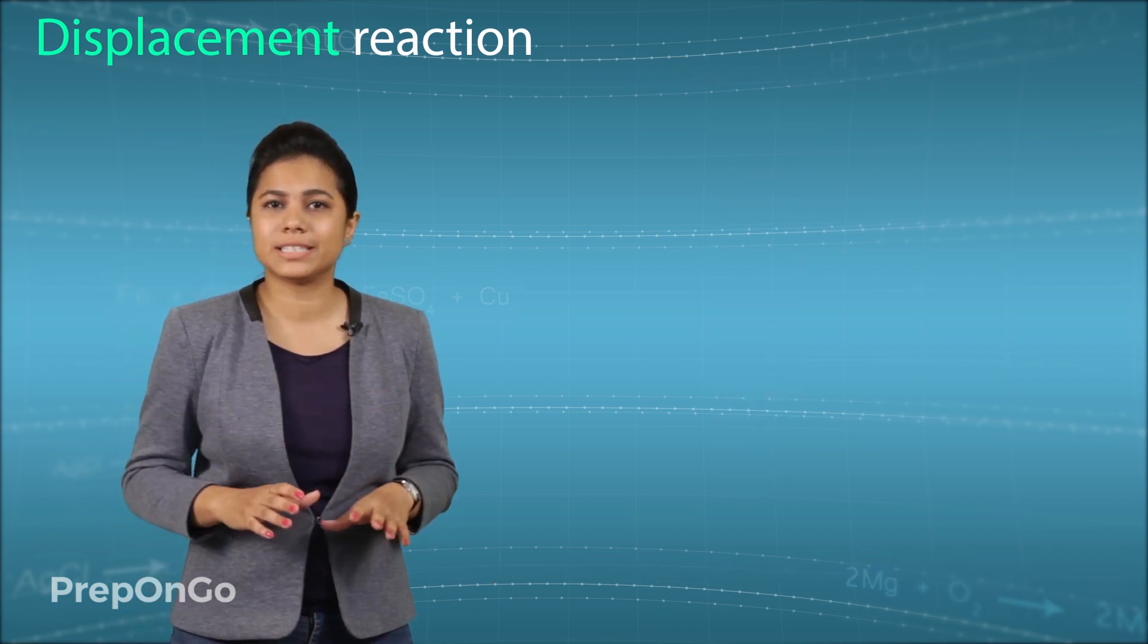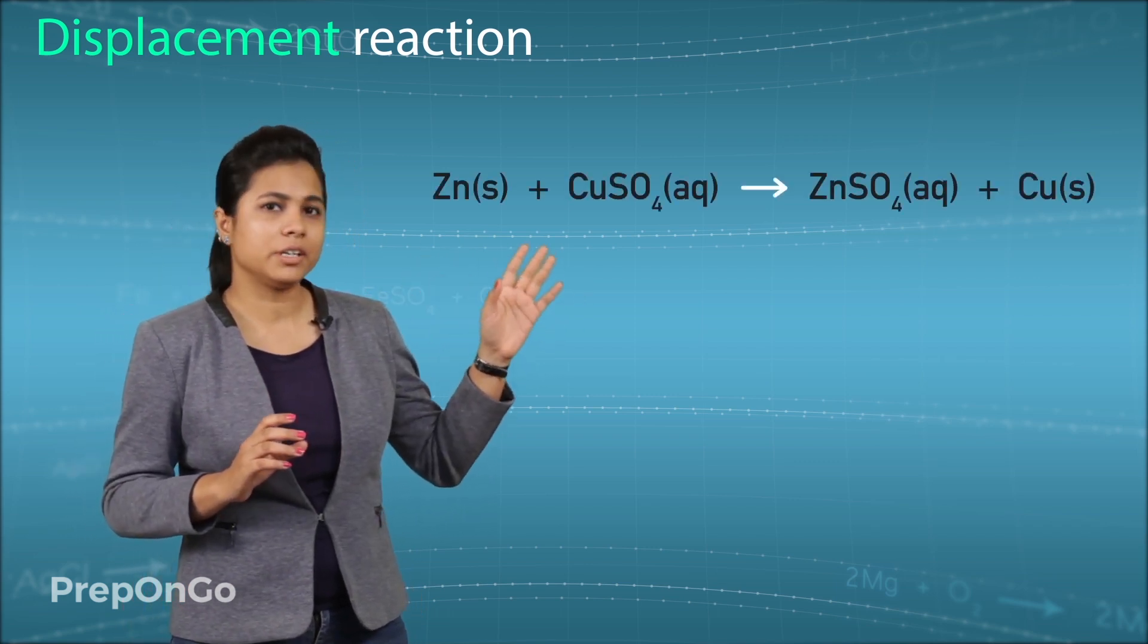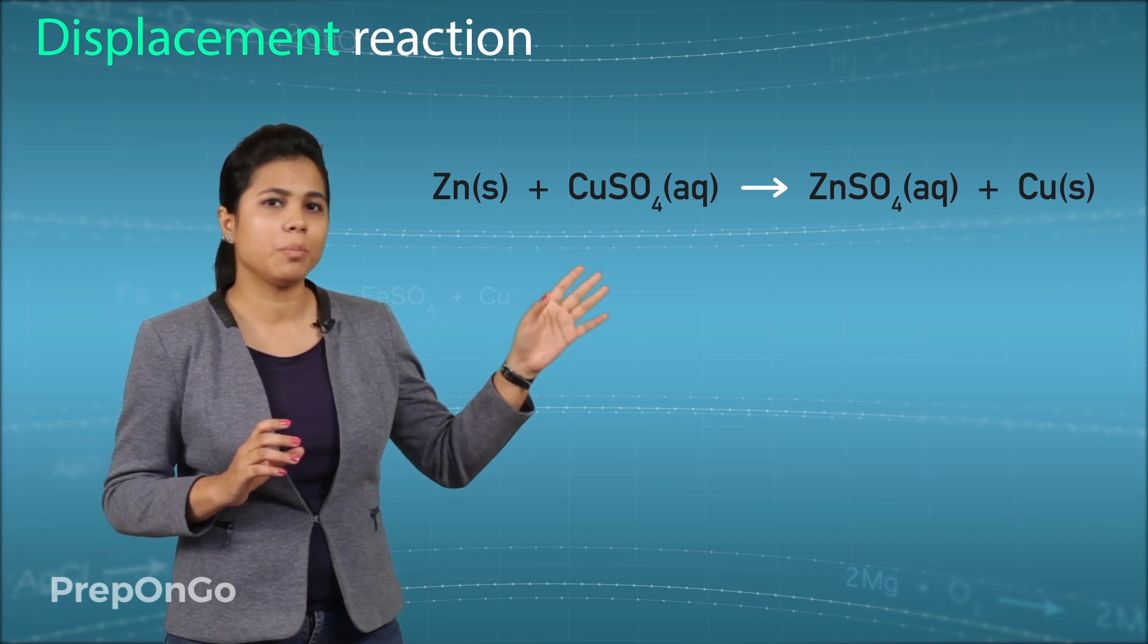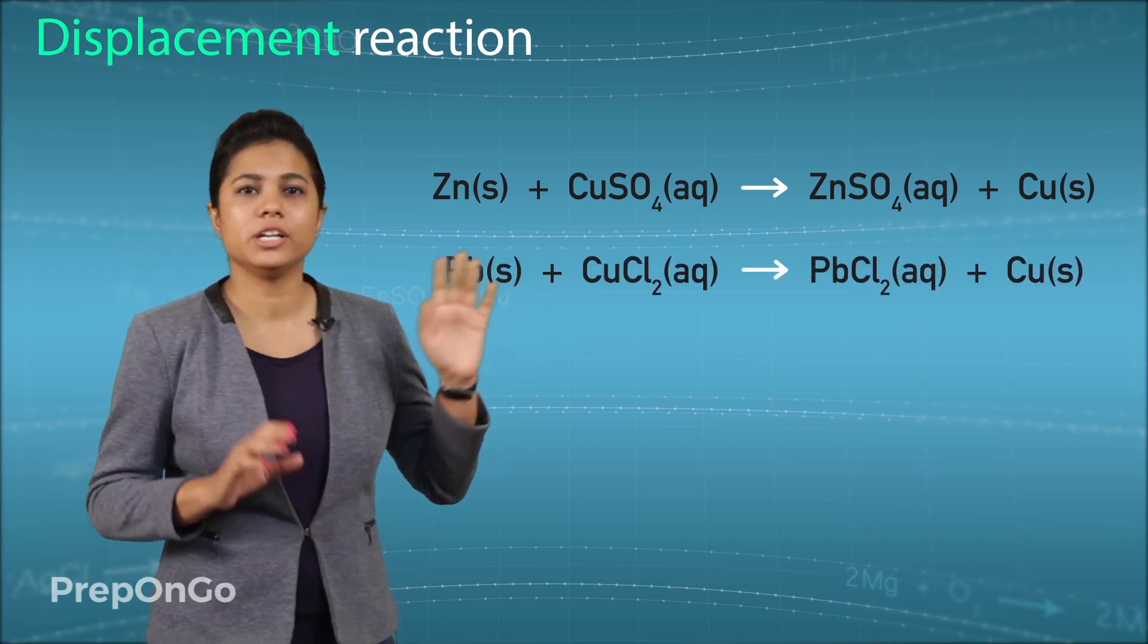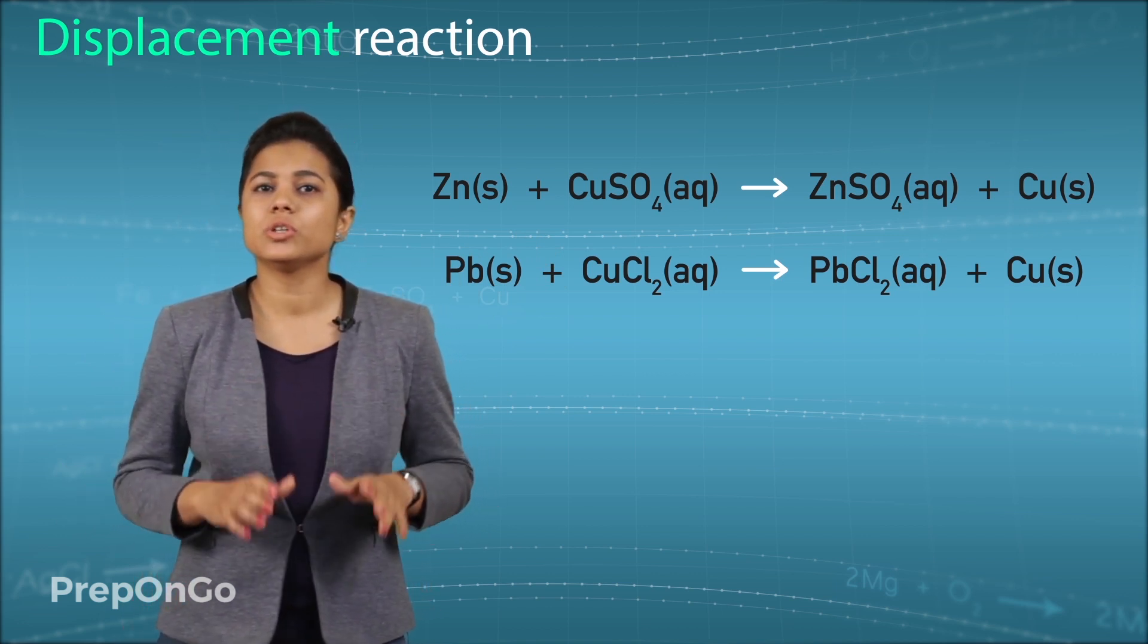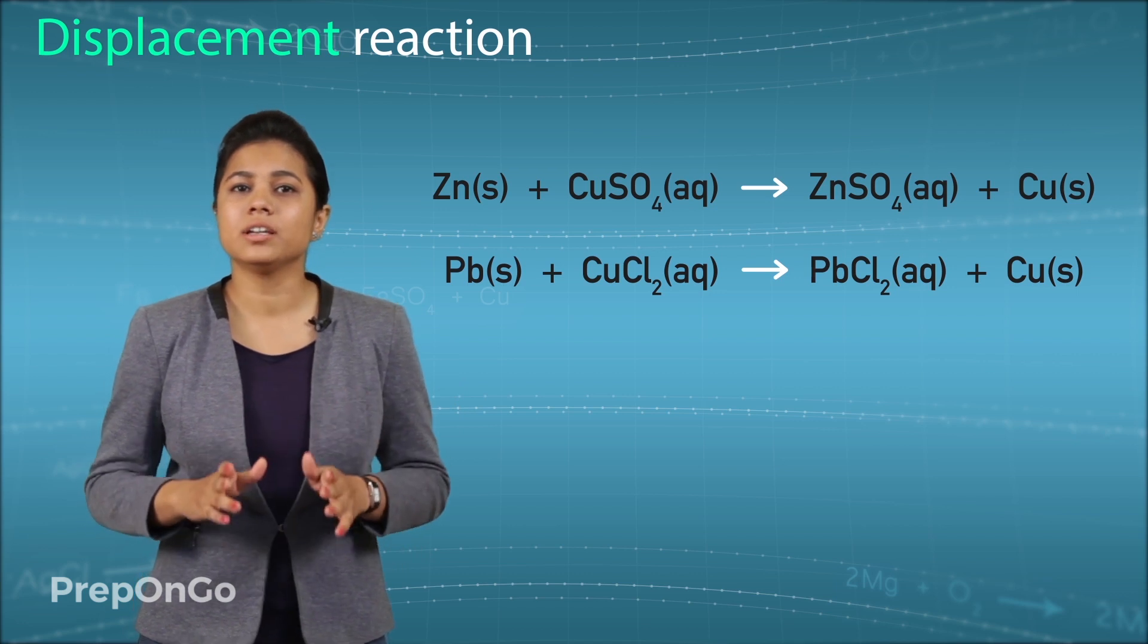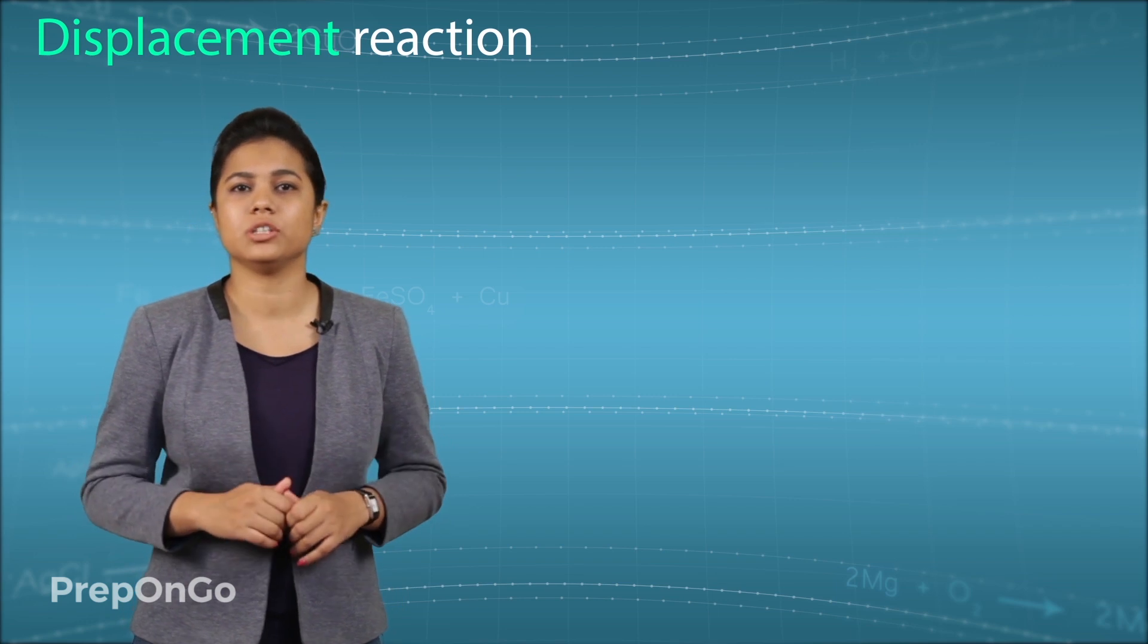There are many other examples like that. You can see when zinc reacts with copper sulphate it gives zinc sulphate and copper is separated out. In a similar way lead reacts with copper chloride to form lead chloride and copper gets separated out. So you see iron, zinc and lead are more reactive than copper. They can displace copper from its solution.